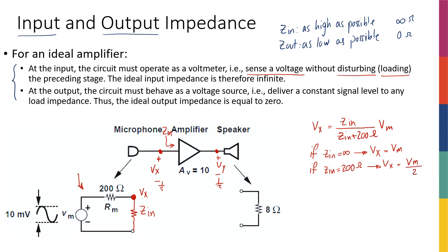If Z_in equals 200 ohms, Vx is Vm divided by 2 — that's bad news. Even if I designed the amplifier to have a gain of 10, by placing this amplifier with its low input impedance, I first divided the microphone signal by 2 and then multiplied by 10, giving an effective gain of only 5. This is why you want input impedance very high — so you don't load or disturb the preceding stage.